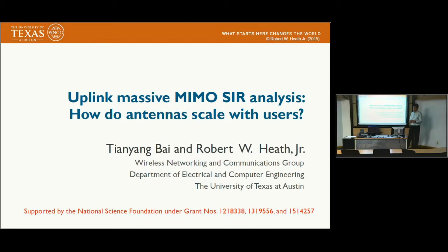The basic question we want to answer is: if you have a hundred antennas serving 10 users in a cell, and now we want to increase the number of users we want to serve in a cell — say we want to serve 20 users — then how many antennas should we add accordingly when we want to keep the same SINR distribution, or same quality of service, at each user?